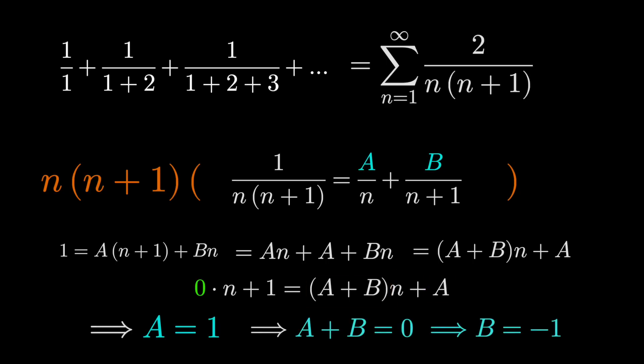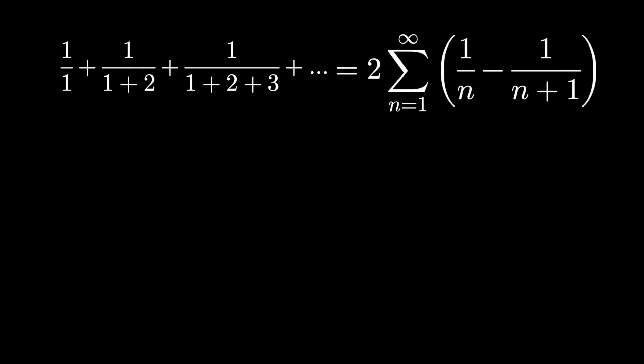Now we're interested in finding this sum. And this is what's known as a telescoping series. That's because if we write out the terms, things start to collapse like a collapsible telescope. Writing out the terms of the series, we would get 1 over 1 minus 1 over 2, then 1 over 2 minus 1 over 3, then 1 over 3 minus 1 over 4, and so on forever.